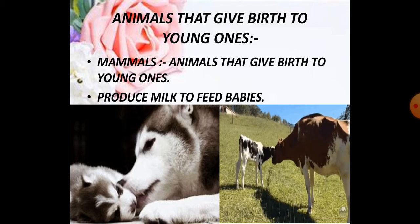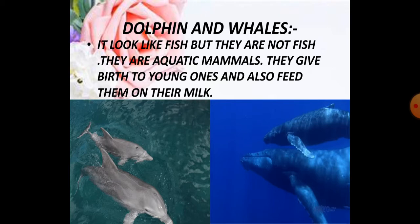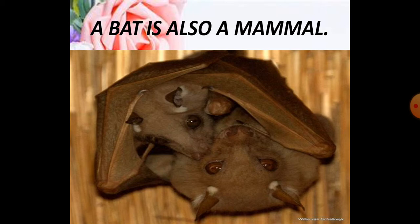Now we will talk about dolphins and whales. You know, the dolphin and the whale look like fish, and they also live in water, but they are not fish — they are aquatic mammals. Dolphins and whales give birth to young ones and also feed their babies on their own milk. There is also the bat — the bat is the one and only flying mammal. The mother bat feeds the baby on its milk and takes care of them.